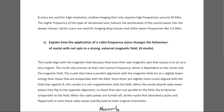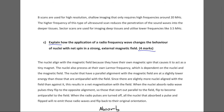Part C asks: explain how the application of a radiofrequency wave changes the behaviour of nuclei with net spin in a strong external magnetic field. This is a four-mark explain question with a lot to it — we need to explain how the nuclei behave and the physics behind it. I'll explain the key parts, though not the full depth. If you'd like a dedicated video on it, please let me know in the comments.